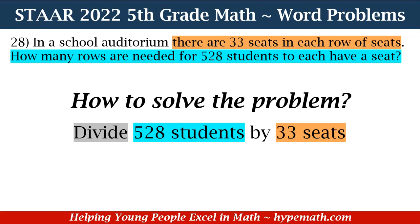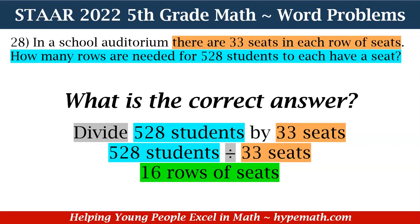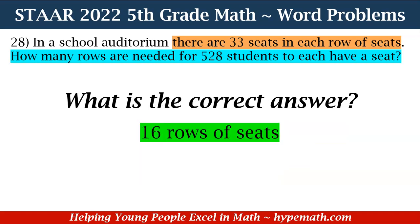What we need to do is divide 528 students by 33 seats. We are going to divide 528 by 33, and when we do that, our answer is 16 rows of seats. We need 16 rows of seats in order for 528 students to each have a seat where there are 33 seats in a row.